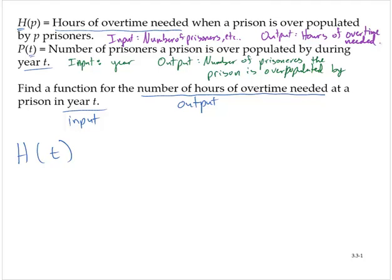So what we need to do is take the output from p of t and use it as the input for h of p. We need to use the output of p of t as the input for h of p. The notation for that looks like this: h of t is h of p of t, and that's the notation we use.